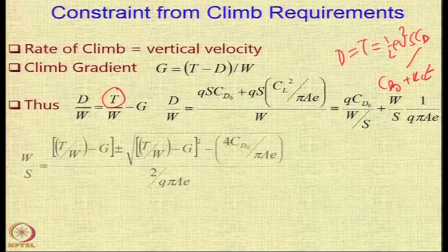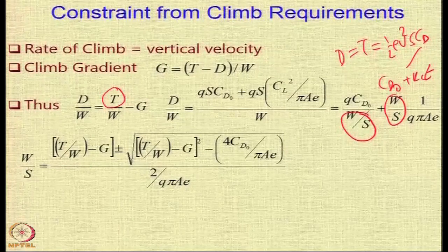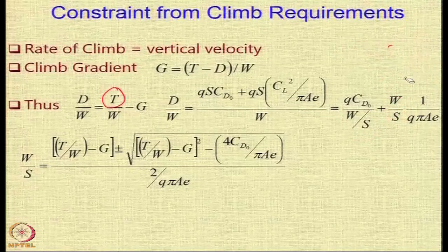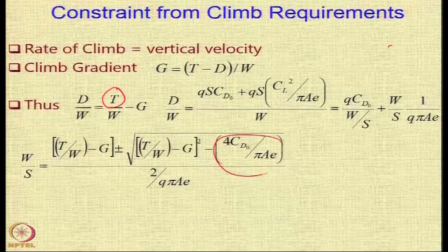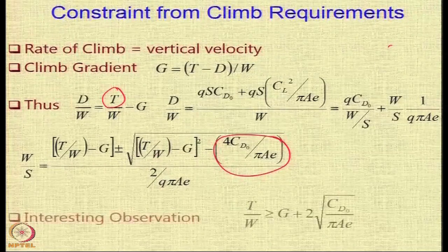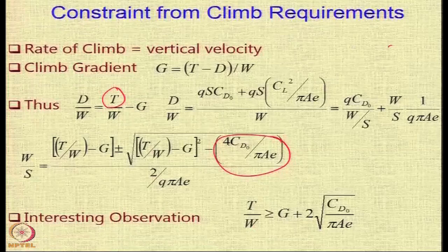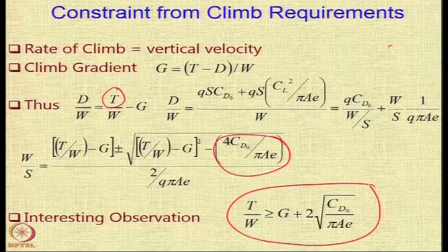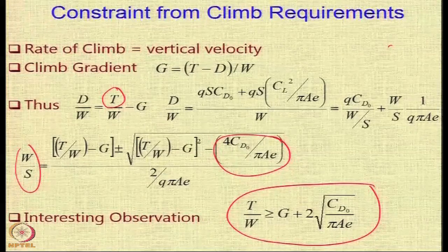From there you can derive that T/W as a function of W/S is a quadratic, since W/S appears in both the denominator and numerator. Through simple algebraic calculations, a condition is obtained: T/W must always be greater than G plus a particular quantity. A quick estimate of the lower limit on thrust-to-weight ratio is given by this expression.